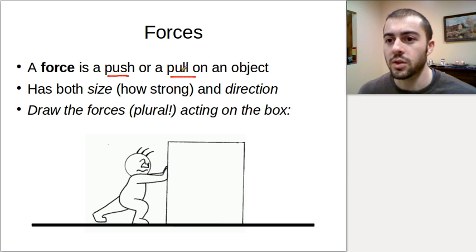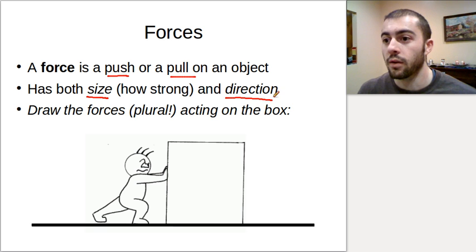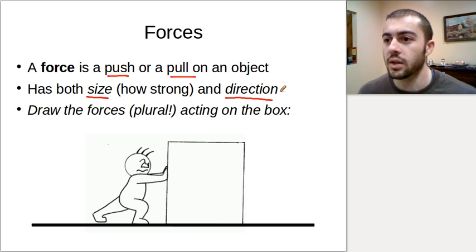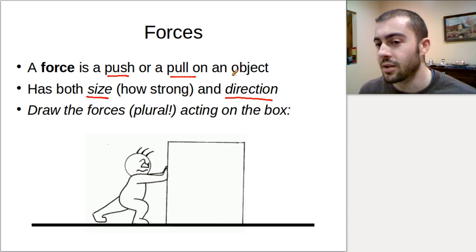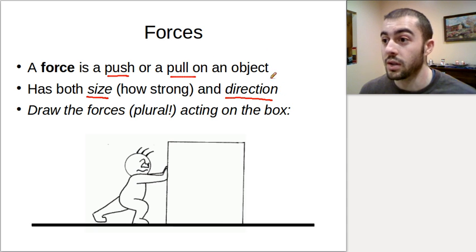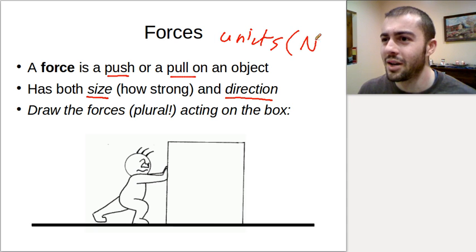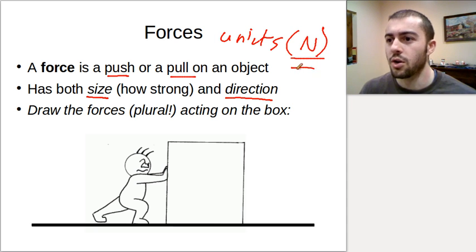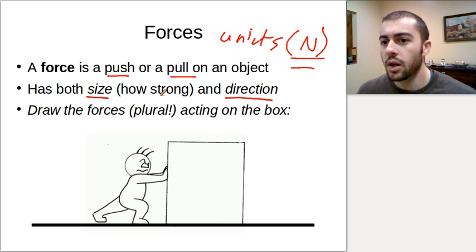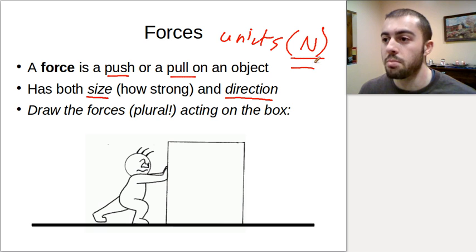So a couple things about forces. Forces - we need to indicate both a size and a direction for the force. We need to say this force is 10 units. The units that we're going to use are called newtons. So it has a size - we would say maybe a force is 5 newtons or 100 newtons. That tells us how big the force is. But also a direction.